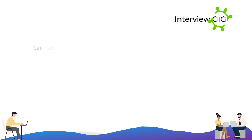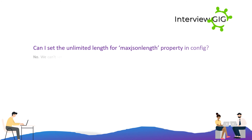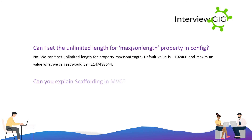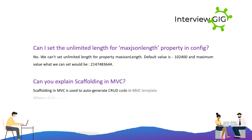Can I set unlimited length for the maxJsonLength property in config? No, we cannot set unlimited length for the maxJsonLength property. The default value is 102,400 and the maximum value we can set is 2,147,483,644.